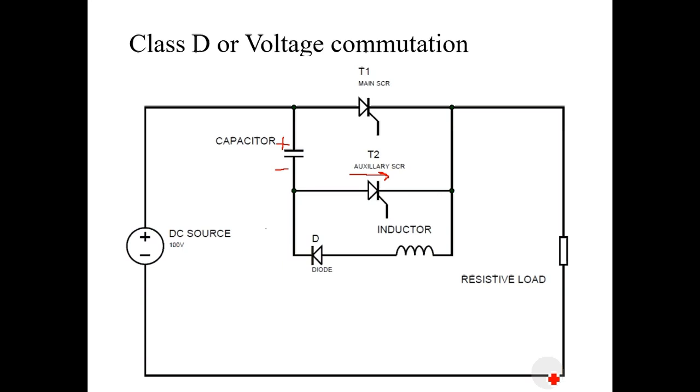This will commutate the auxiliary SCR that is T2. Like this, main thyristor T1 and auxiliary thyristor T2 both will get turned off.